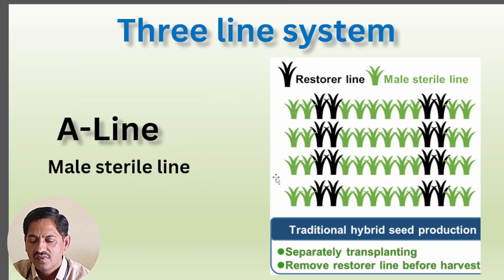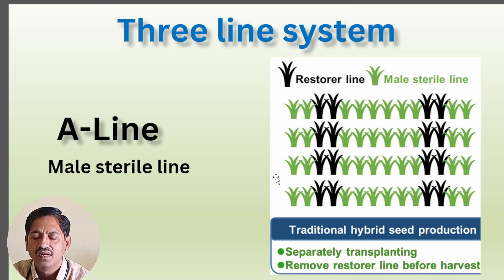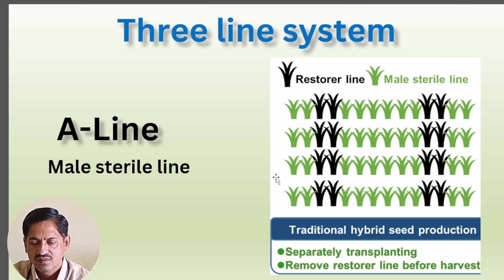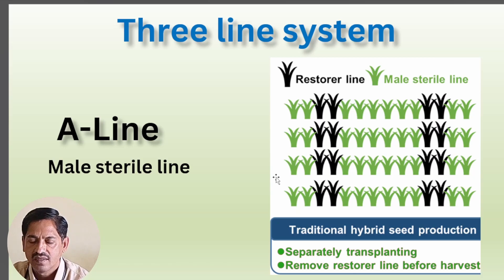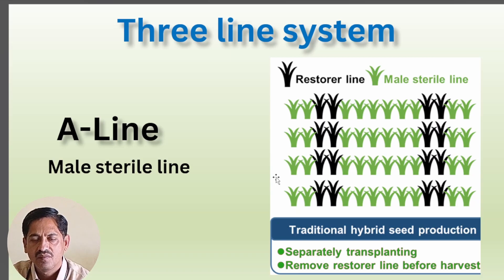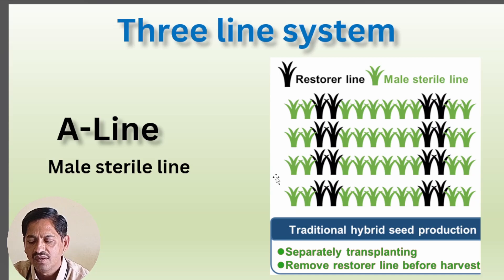The three-line system, as the name indicates, requires three lines. What are those three lines? Just as we discussed: A line, B line, and R line. These three lines are very important in hybrid seed production of any field crop.